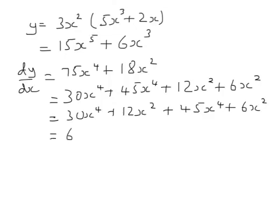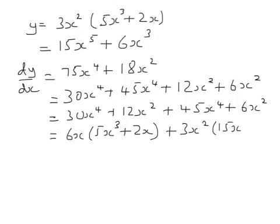Now let's factorise. This is 6x times 5x cubed plus 2x — just check that: 6 times 5 is 30, 6 times 2 is 12, x times x cubed, yes that works. And then this factorises to be 3x squared times 15x squared plus 2 — just check that: 3x squared times 15x squared gives 45x to the power 4, and then that's 6x squared. So we're looking for patterns here, and what we can see is that 3x squared has come there, and the 5x cubed plus 2x has come there.